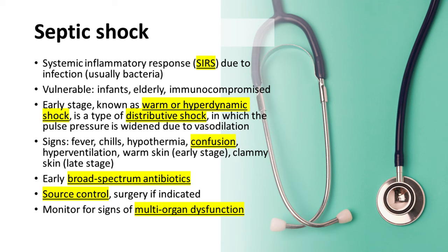Septic shock primarily affects vulnerable populations such as infants, the elderly, and those with compromised immune systems. For instance, a severe urinary tract infection can progress to sepsis and subsequently to septic shock. The early stage, also known as warm or hyperdynamic shock, is a type of distributive shock in which pulse pressure is widened due to vasodilation. Signs of sepsis include fever, chills, hypothermia, confusion, hyperventilation, warm skin in the early stage, and clammy skin in the late stage.